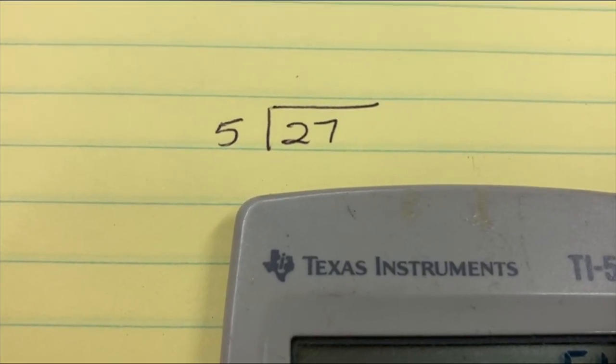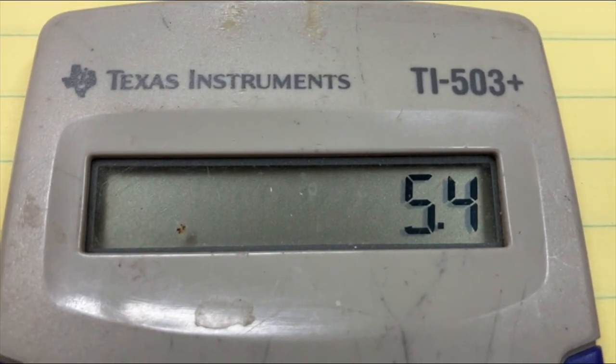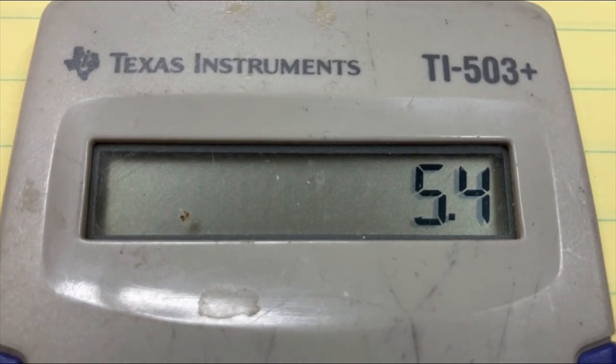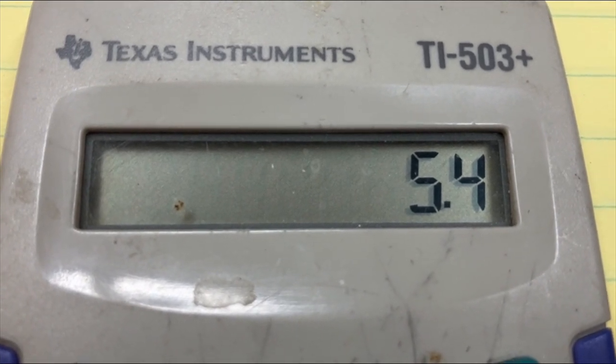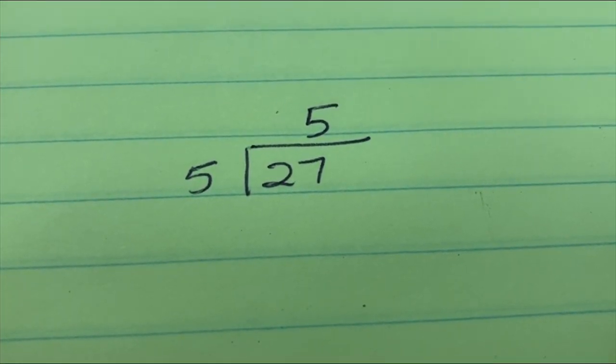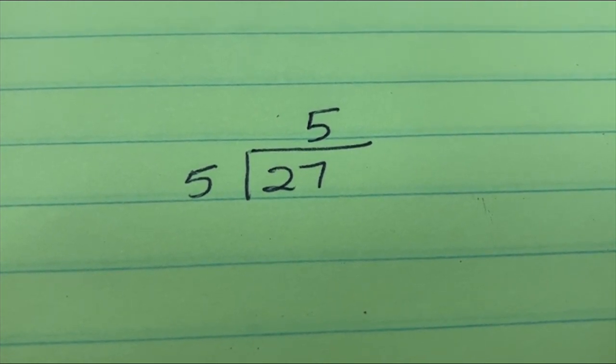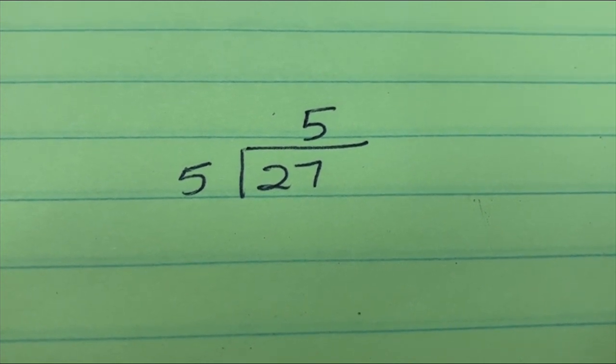Our trusty little calculator says that 27 divided by 5 is 5.4. Excellent. 5 works because it's the whole number. We'll start with that. We know 5 didn't go into 2, so we put the 5 over the 27. Now we need to multiply 5 times 5 and see what we get.